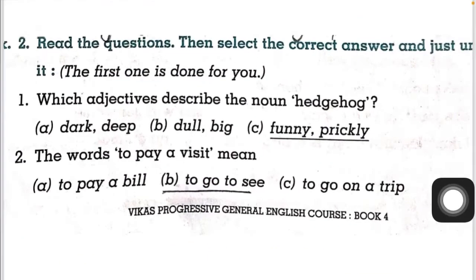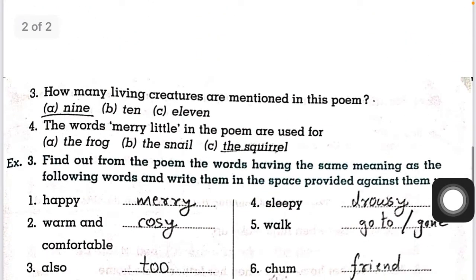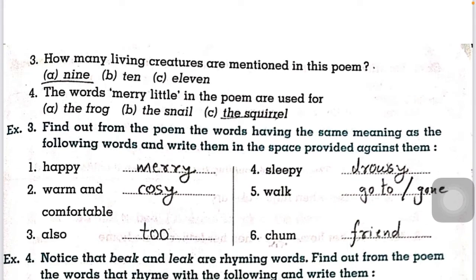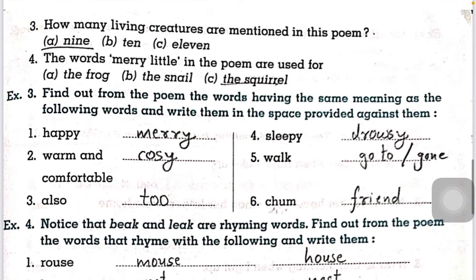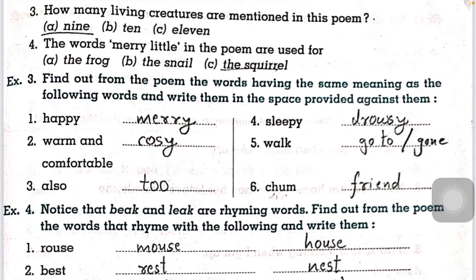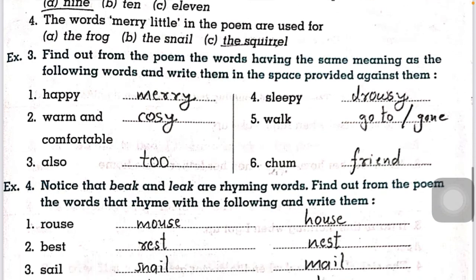Next question: how many living creatures are mentioned in this poem? There are nine living creatures mentioned. They are: a squirrel, hedgehog, frog, mouse, snail, mole, bats, and tortoise — that makes eight. Plus the poet himself is also going to everyone's home and checking on them, so the total is nine living creatures mentioned in this poem.